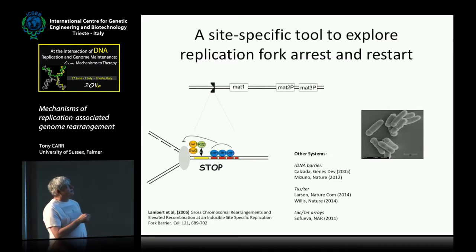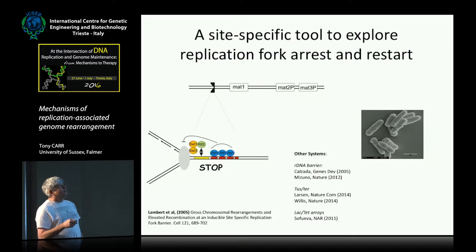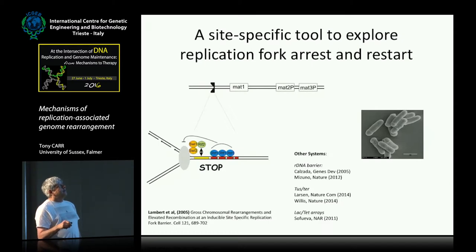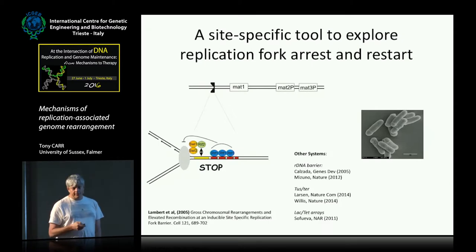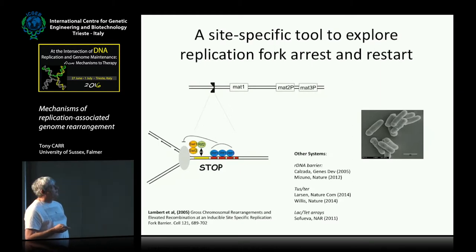That particular direction is in this direction. It's actually important for mating-type switching in fission yeast because the way mating-type switches starts off by laying down a marker, thought to be a couple of RNA molecules in the DNA. That requires that the replication fork goes through in a particular direction, so the efficiency of mating-type switching is affected if you take this sequence away, but not the mechanism.